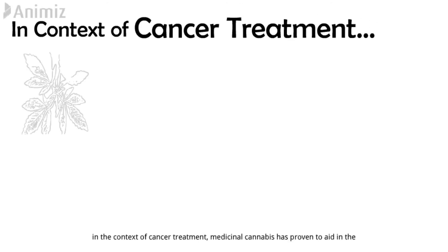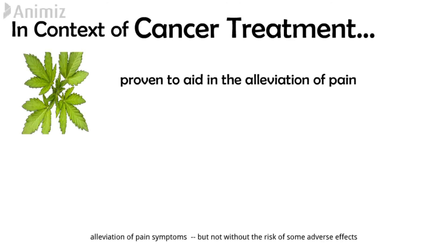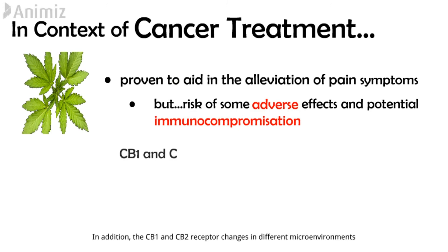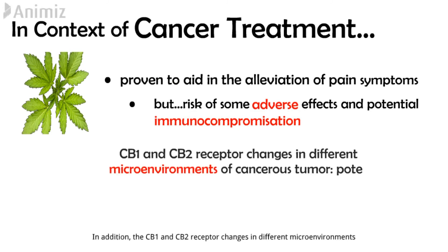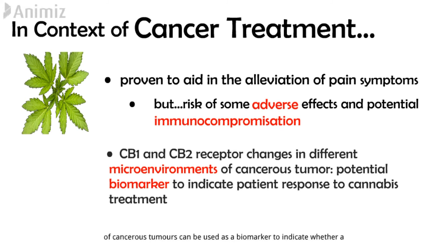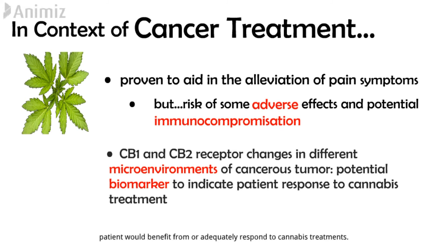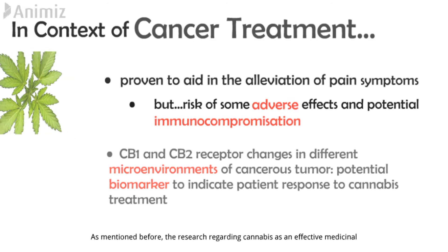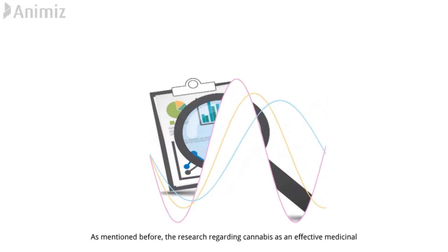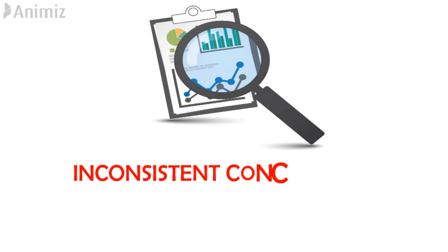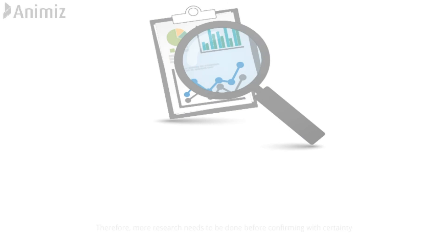To summarize, from the research we explored, we can conclude that in the context of cancer treatment, medicinal cannabis has proven to aid in the alleviation of pain symptoms, but not without the risk of some adverse effects and potential immunocompromisation. In addition, the CB1 and CB2 receptor changes in different microenvironments of cancerous tumors can be used as a biomarker to indicate whether a patient could benefit from or adequately respond to cannabis treatments. As mentioned before, the research regarding cannabis as an effective medicinal intervention is scarce and the conclusions made in different studies are largely inconsistent; therefore, more research needs to be done.